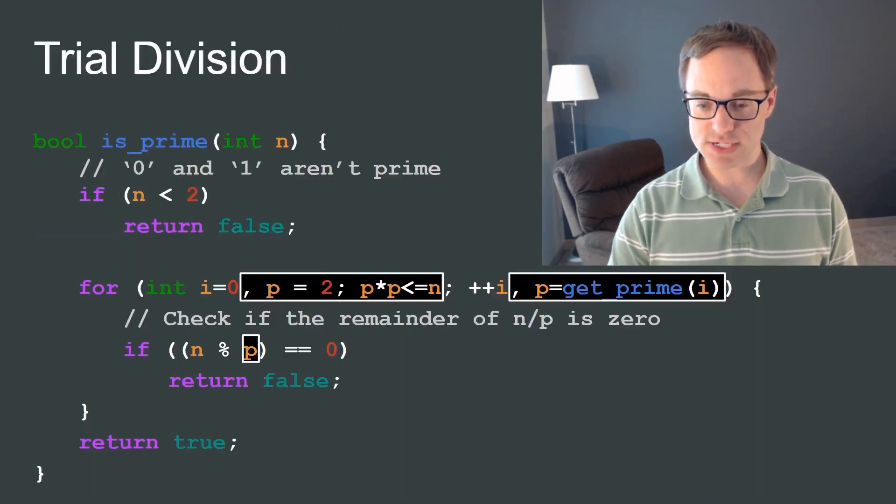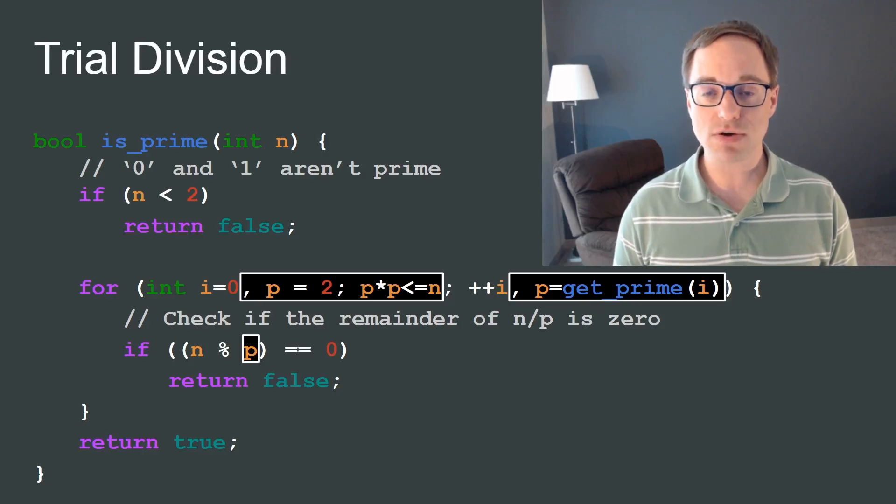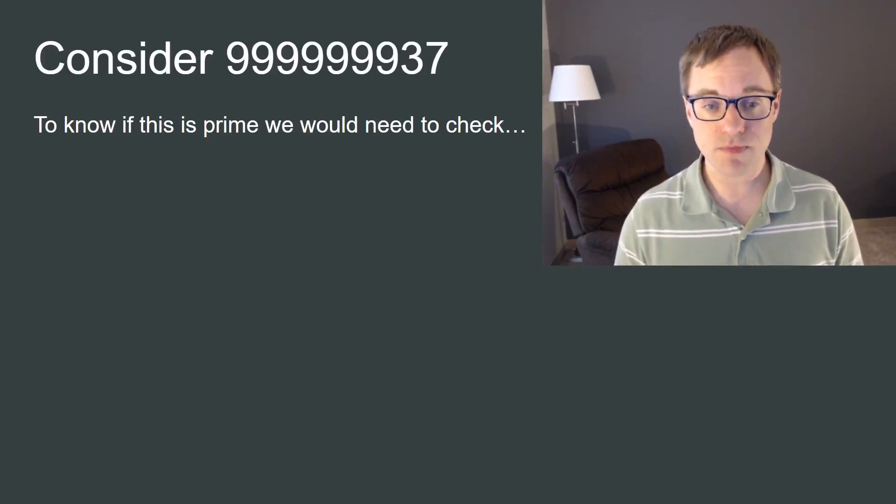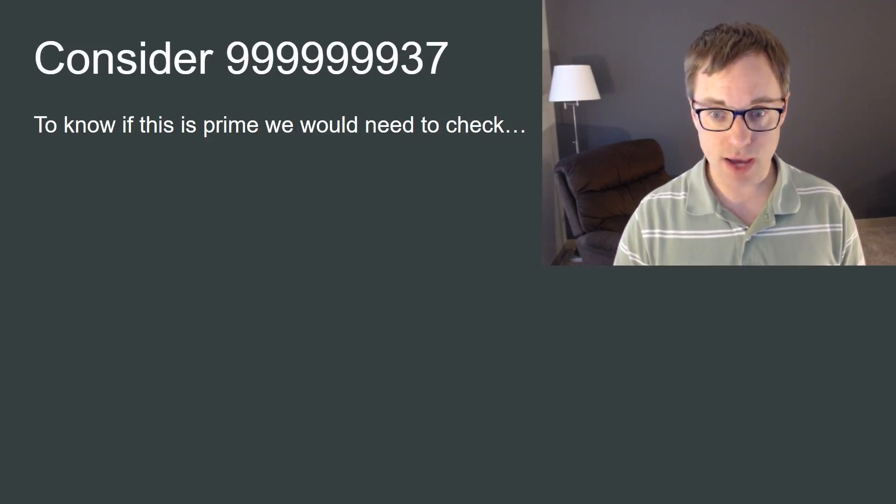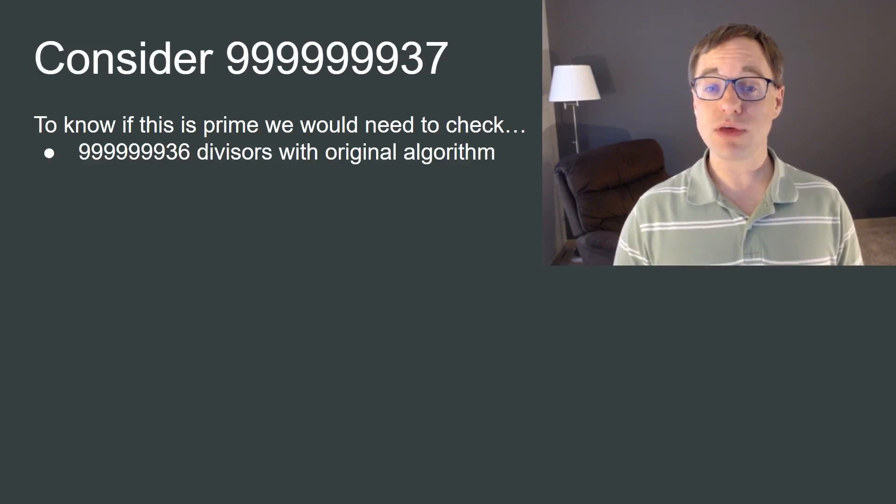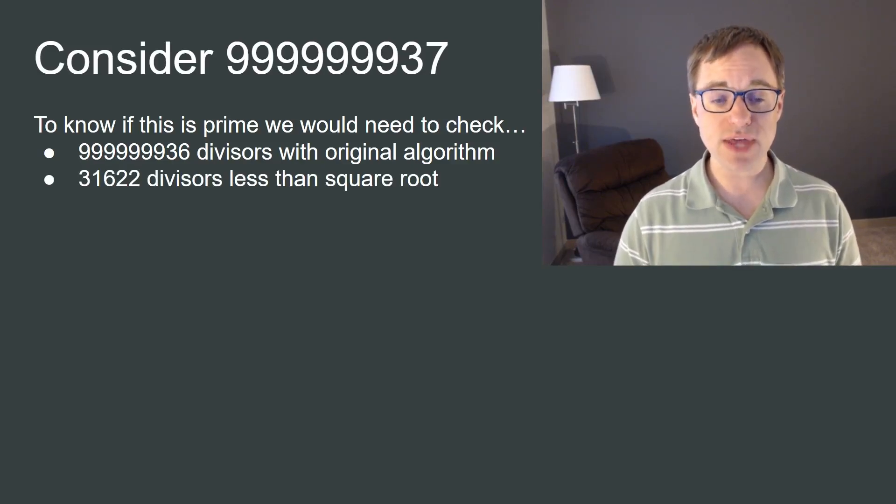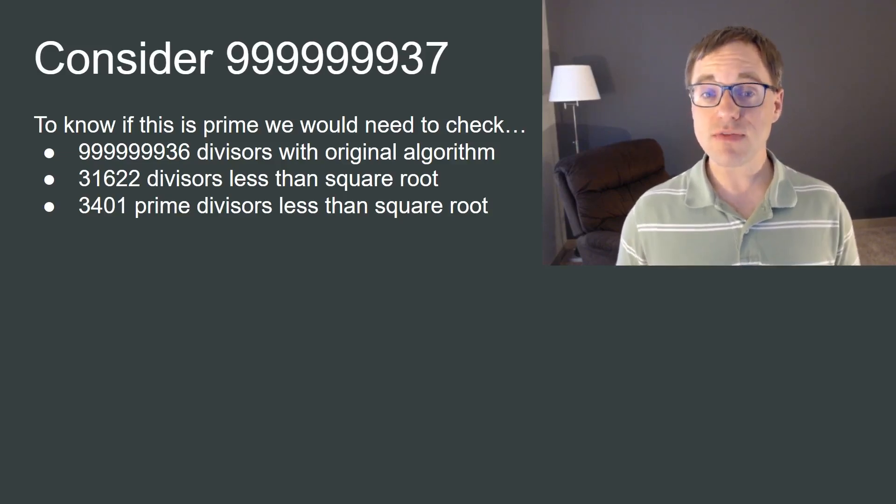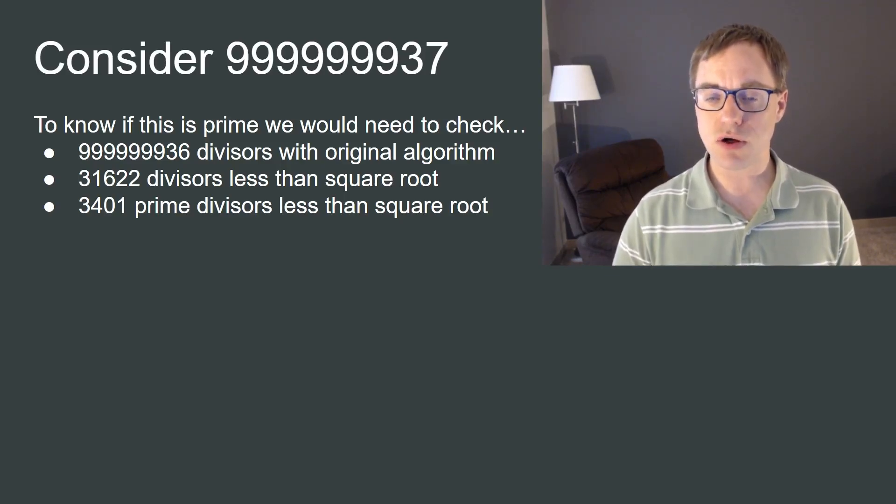Keeping this in mind, we can update our code like this. Now on each iteration of the loop, we calculate the ith prime and use that as our divisor. So now let's consider how our optimizations perform with a number of significant size. In order to determine whether 999,999,937 is prime, we would need to check 999,999,936 divisors with the original algorithm, 31,622 divisors less than the square root, but just 3,401 prime divisors less than the square root. Obviously, this is a huge improvement, but aren't we skipping over something important? In the code I showed a moment ago, I made use of a function called get prime.